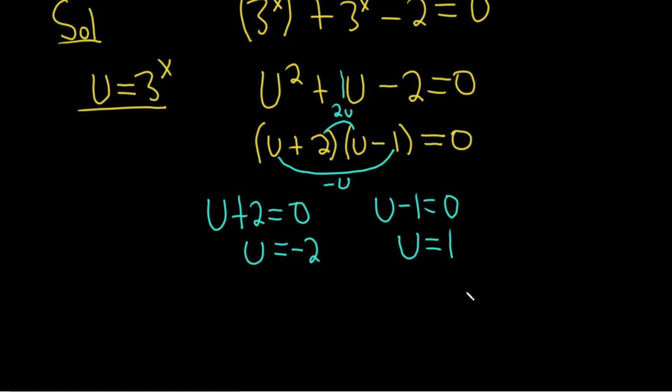Now we go back to our original variable x. Since u = 3^x, we have 3^x = -2 or 3^x = 1.